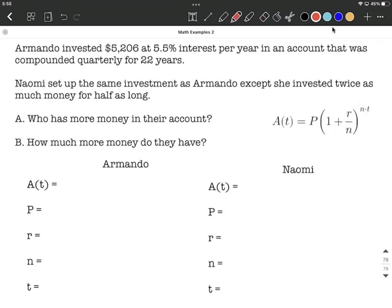First, Armando has invested $5,206. That's going to be our starting amount, the principal, so $5,206 gets filled in for P on Armando's side at 5.5% interest per year. We want to write that as a decimal, so two decimal places over, 0.055 is going to get filled into his formula.